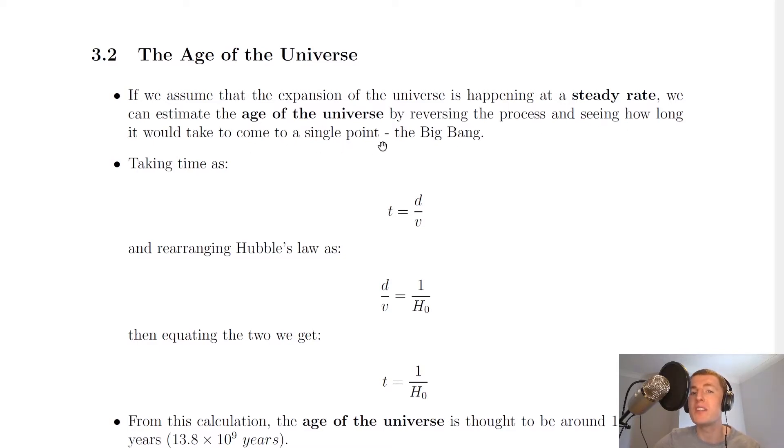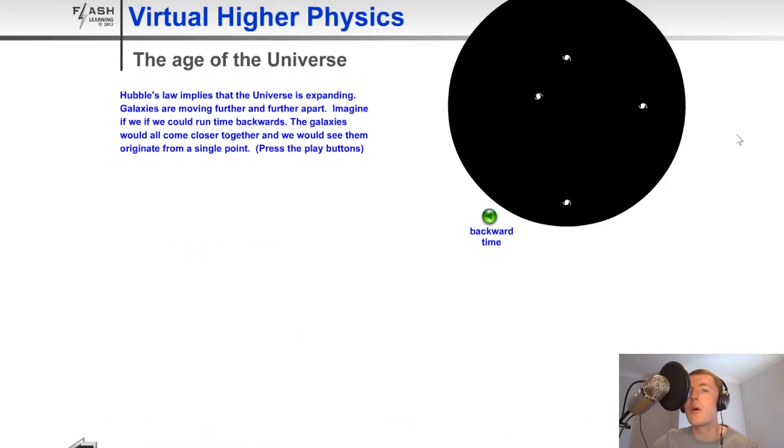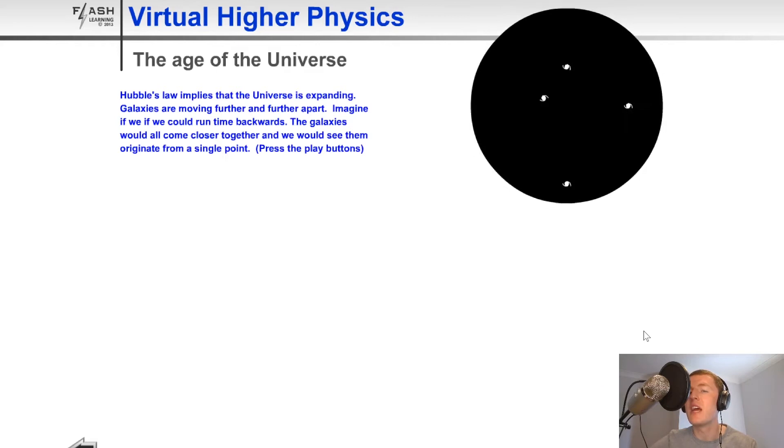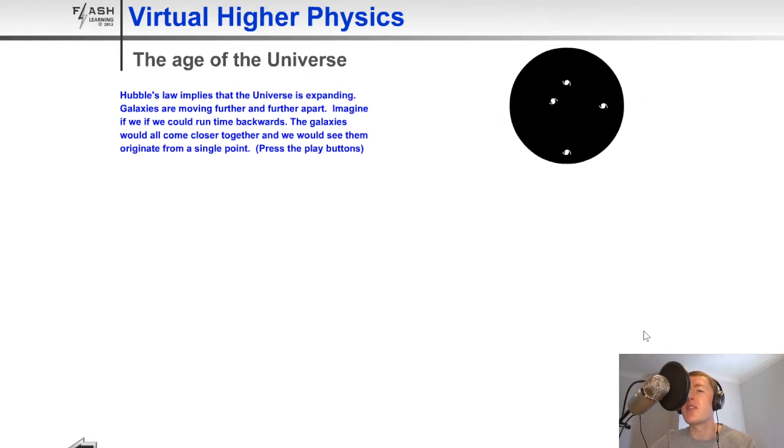Just to visualize this, I'm going to show you a quick animation. Imagine this is the size of our universe just now and it's continuing to expand outwards. If we go backwards in time, then it would look like this, almost like a deflating balloon.